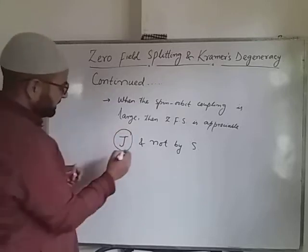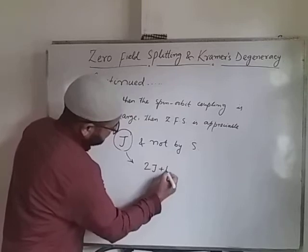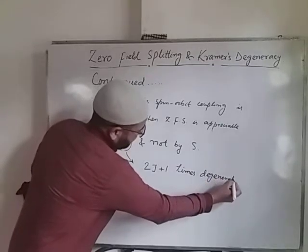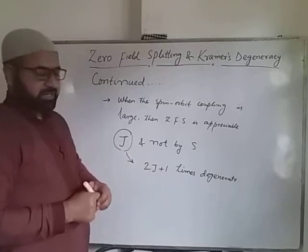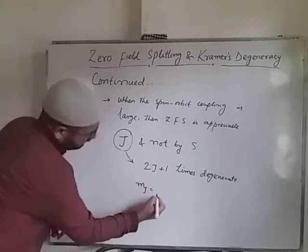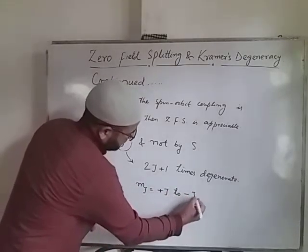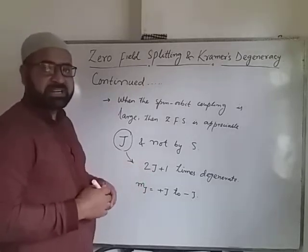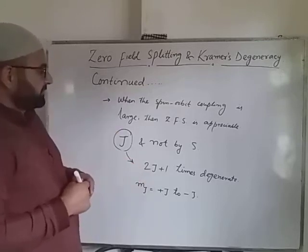The total angular momentum quantum number J will be 2J+1 times degenerate, according to quantum mechanics. The values of mJ will vary from +J to −J. So if it is 2J+1 times degenerate, there is every possibility that we can get that number of components in case of systems where we have spin-orbit coupling.